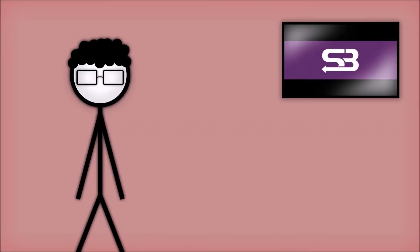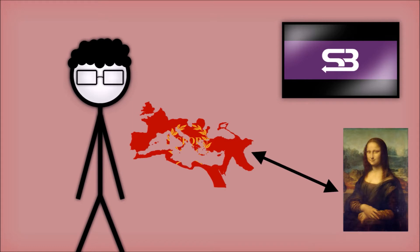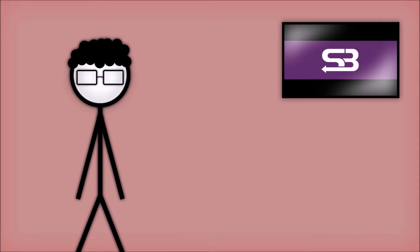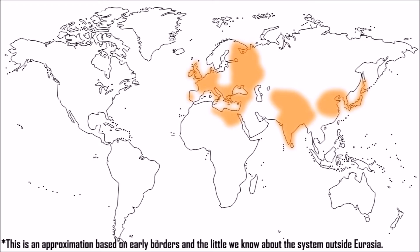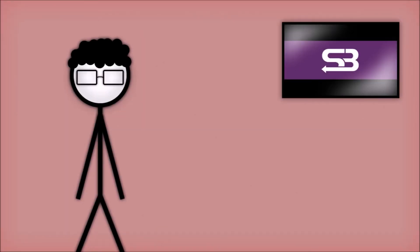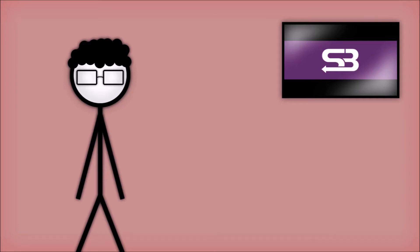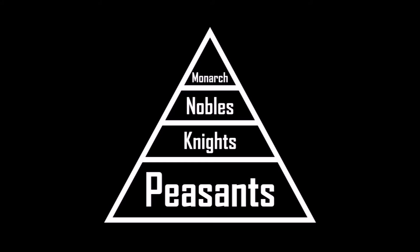In many parts of European history, feudalism is a major factor during much of the period between the Roman era and the Renaissance. Much of the area highlighted in orange was at one point under this system. But what exactly is feudalism? In the simplest way possible, it was for the most part the system of monarchs and other classes that had a strong importance on its military.